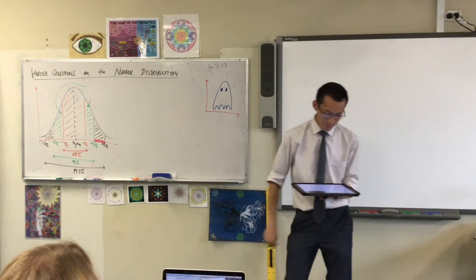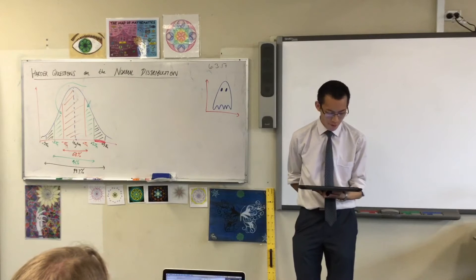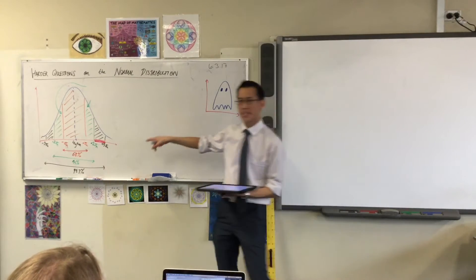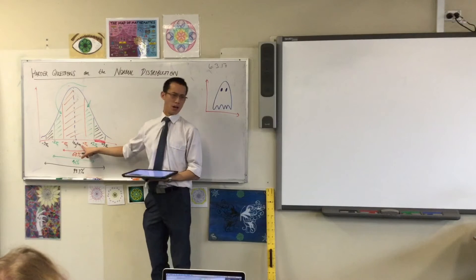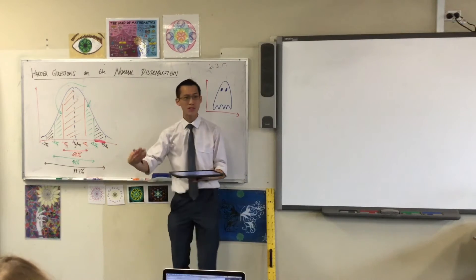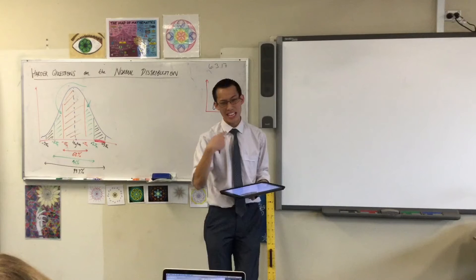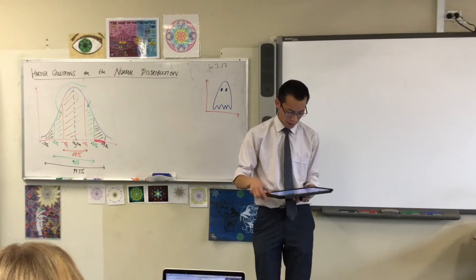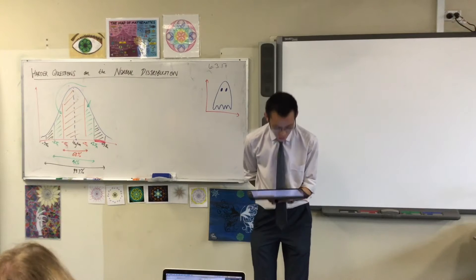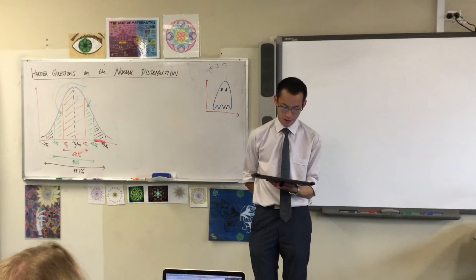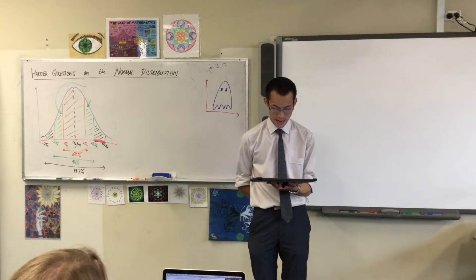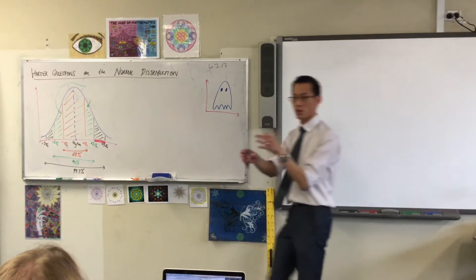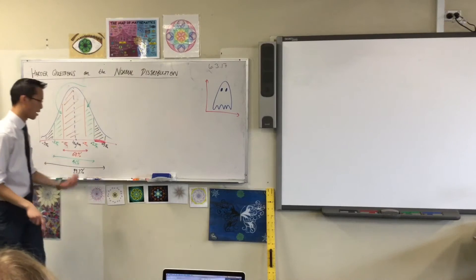It then goes on to say, with a standard deviation of eight months. So now, I'm going to look at this and instead of saying plus a standard deviation, plus two standard deviations, now I know what they're talking about. They're talking about amounts of time. So keep reading with me. The manufacturer guarantees to replace any battery that does not last three years. Now we need to come back to the diagram. And if you haven't drawn yourself a new little normal distribution, now is the time to do it.